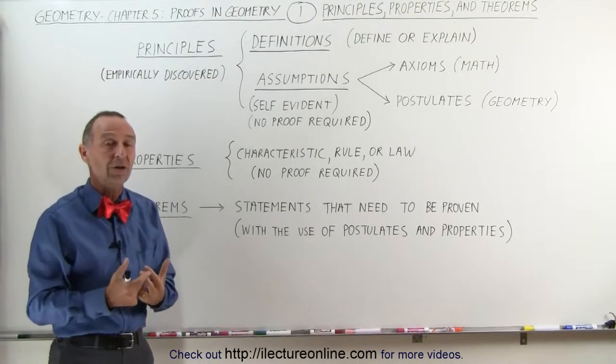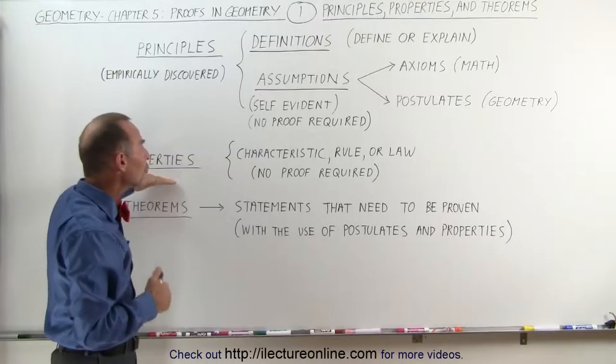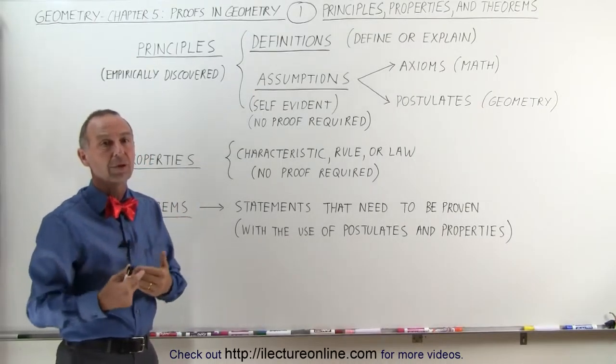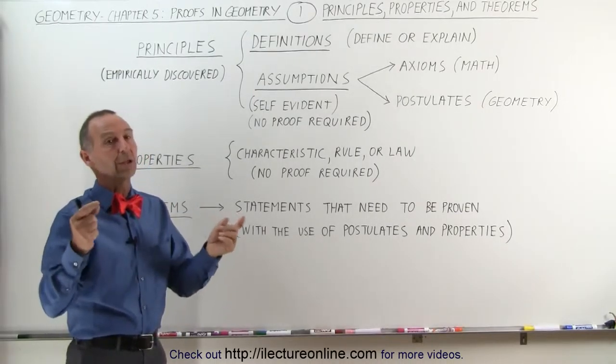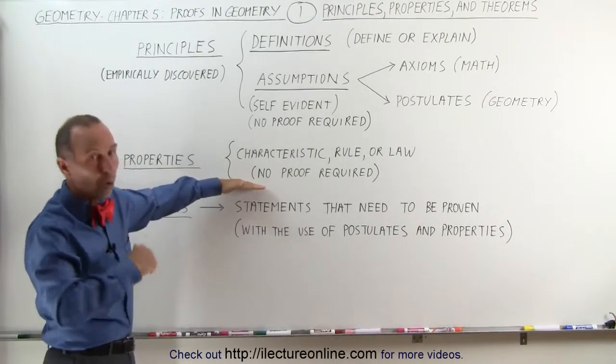For example, when we talk about a square, everybody would know that a square has four sides and one of the properties of a square is that all four sides are equal to one another. So that's a property about squares and that the angles are all 90 degree angles.